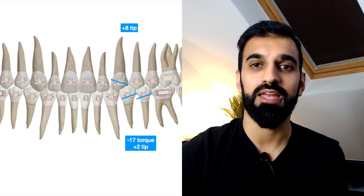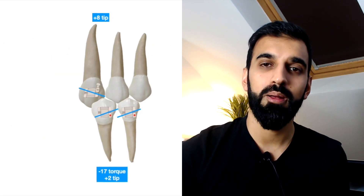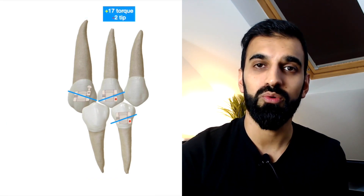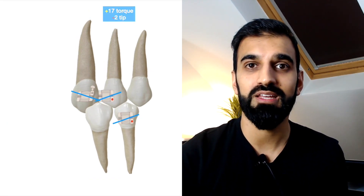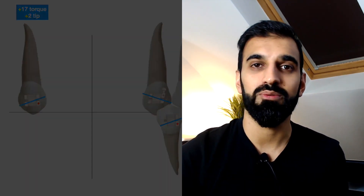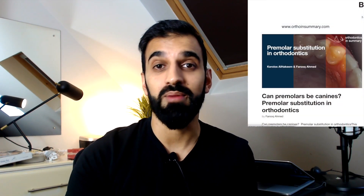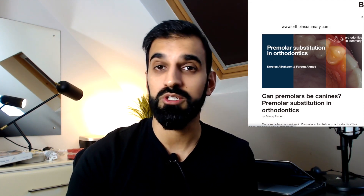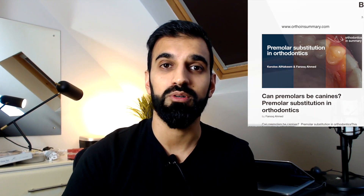The final option is using a contralateral lower premolar bracket — a suggestion by Marco Rosa. The advantage here is 7 degrees of positive torque, also positive tip, and no plasty is needed. For the premolar, we can offset the bracket and position it more distally, which helps to hide the palatal cusp. This is discussed in more detail on the Orthodontics in Summary website blog.